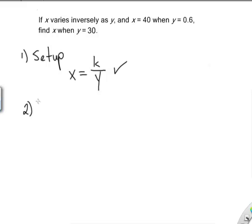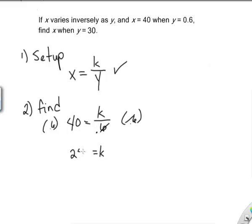Now step two is to find k. So we're going to use the second piece of our information up here, where it says x equals 40 when y equals 0.6, to find our k. So we plug in 40 for x, and we have our k, and 0.6 for y, and we simply multiply both sides by 0.6. All right, we multiply both sides by 0.6, and we end up with k is equal to 24.